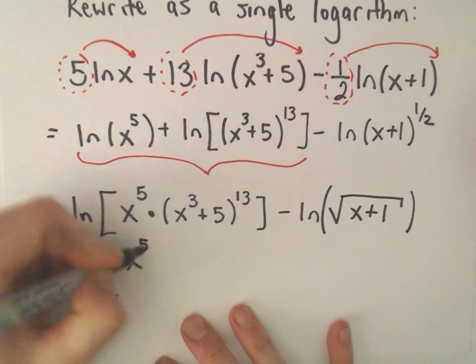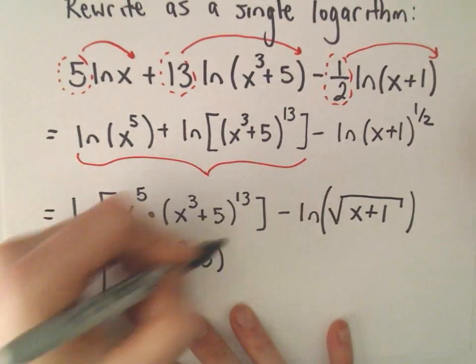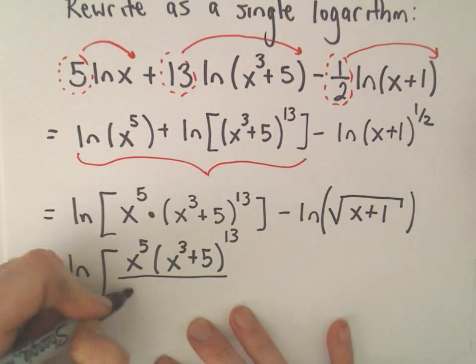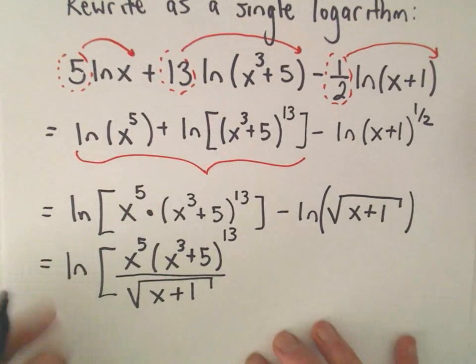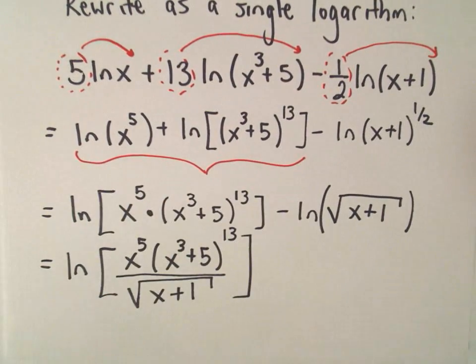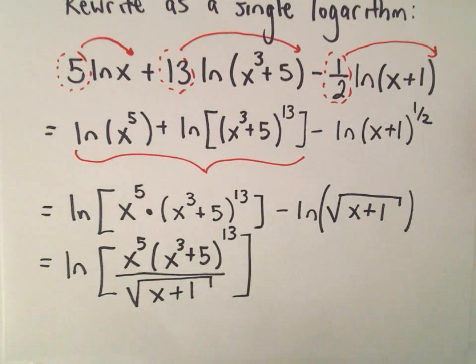Well, alright, so we've got x to the 5th times x to the 3rd plus 5 raised to the 13th power, all divided by the square root of x plus 1. And now we're finished. We've taken our original expression, and we sort of recondensed it as an expression involving a single logarithm.